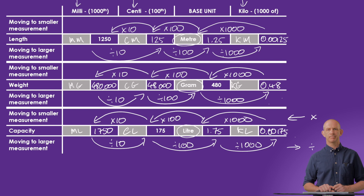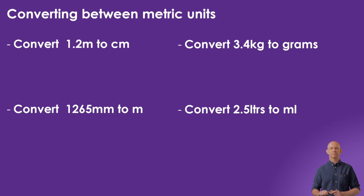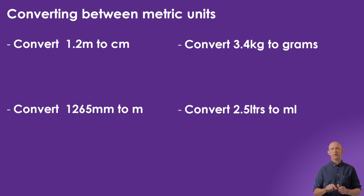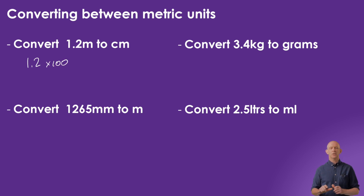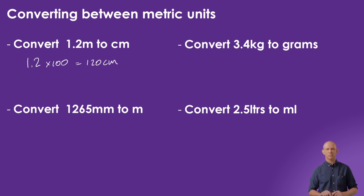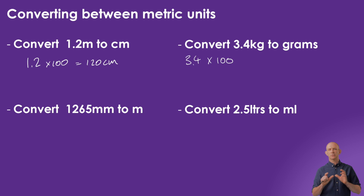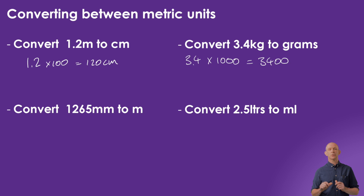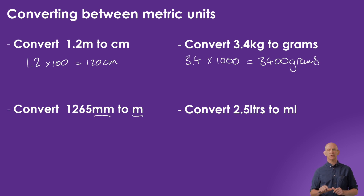Next, we have some conversion problems. To convert 1.2 meters to centimeters, we multiply by 100 since there are 100 centimeters in a meter and we're moving from a larger to a smaller unit — giving us 120 centimeters. To convert 3.4 kilograms to grams, we multiply by 1000, giving us 3400 grams.